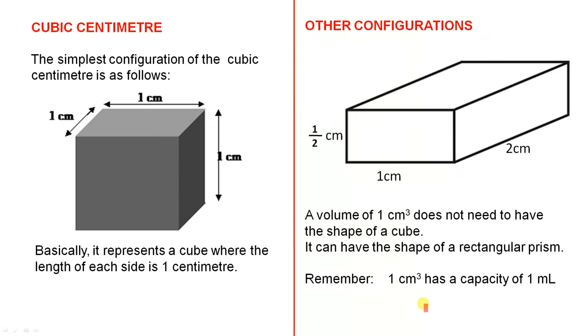And finally, very important to remember: a cubic centimetre — that is one cubic centimetre — has a capacity of one millilitre.